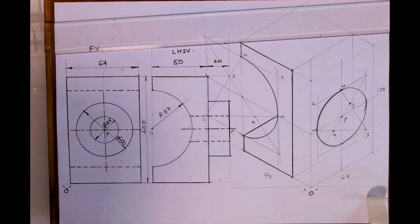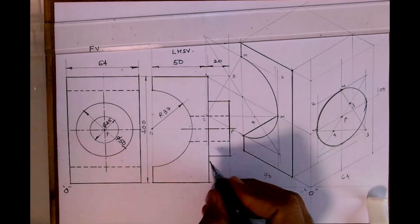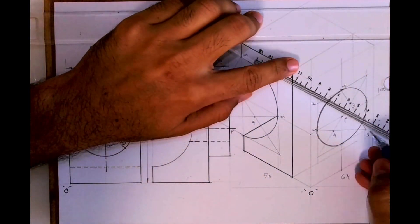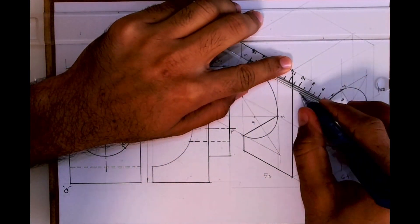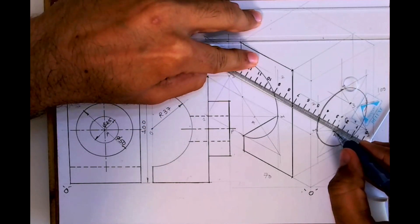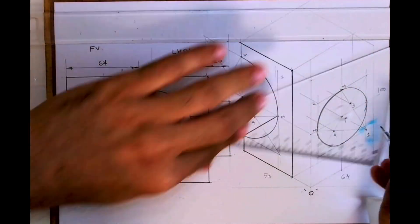So we are done with the outer circle. Now the same circle is behind. How much behind? 20. So I have to take all the points behind by 20.